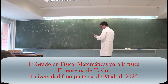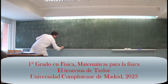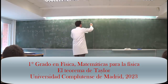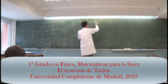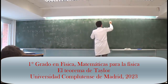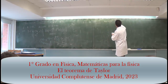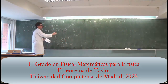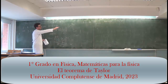Let me bound the error. Let's call this the remainder R. R of order K+1 is less than or equal to |X minus A|^(K+1) divided by (K+1) factorial, times the maximum of the (K+1)-th derivative of f on the interval [A, X]. That is what it means: the error is bounded.